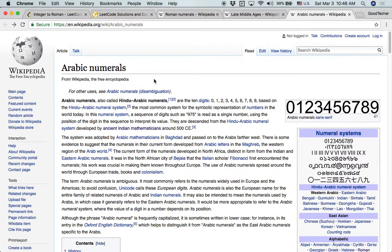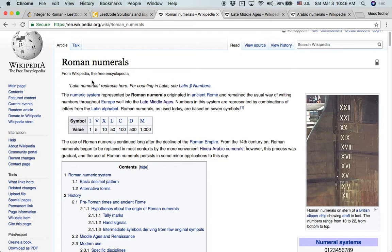So what is popular today is the Arabic numerals, also called Hindu Arabic numerals, those 10 digits we are very familiar with. For today's coding problem, it's about converting these Arabic numerals to Roman numerals.